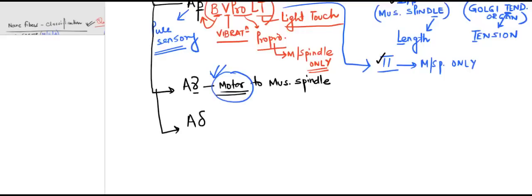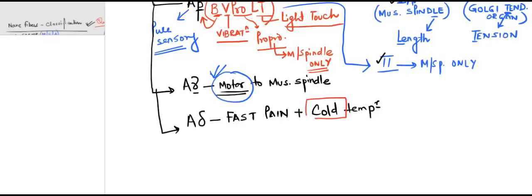Last in the A group are A-delta fibers. These carry two things: fast pain and cold temperature. The important word here is cold — they do not carry warm temperature, only fast pain and cold temperature. Since A-delta fibers are sensory fibers, they are classified as Lloyd Type 3. So to recap: Lloyd 1 = A-alpha sensory, Lloyd 2 = A-beta sensory, Lloyd 3 = A-delta sensory.